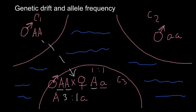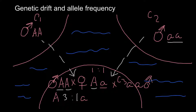That gives us a three to one ratio, or 75% dominant allele to 25% recessive allele. Here is another scenario: if the male from community two — whose genotype is homozygous recessive, small a small a — migrates and mates with this female in community three.